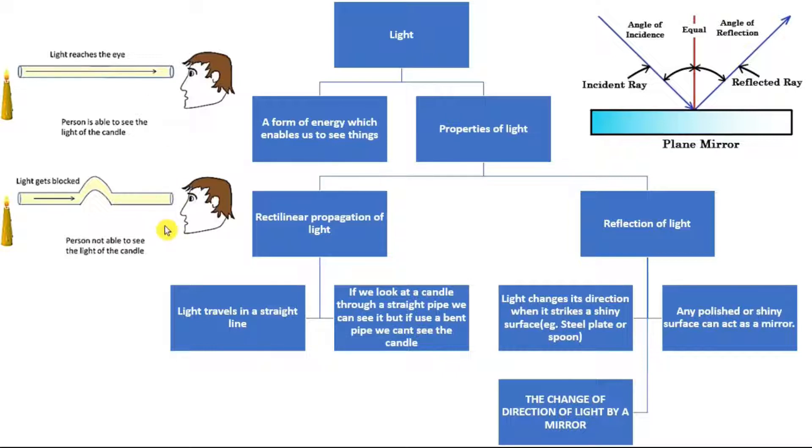Now if I give you a straight pipe and a curved pipe and I place a candle in front of you, you can see the candle through the straight pipe but you cannot see it through the curved pipe. Why? Because this is the rectilinear propagation of light. No matter what happens, light will never pass through a curved path.